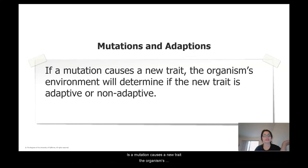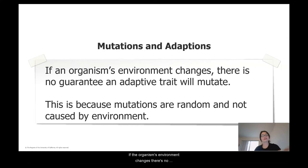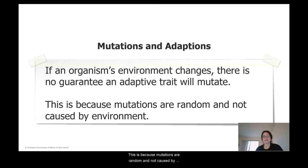If a mutation causes a new trait, the organism's environment will determine if that new trait is adaptive or not. If the organism's environment changes, there's no guarantee that an adaptive trait will mutate — because mutations are random and not caused by the environment.